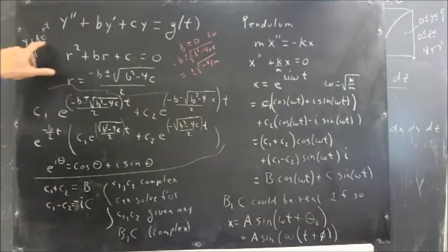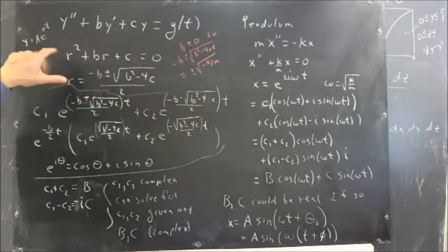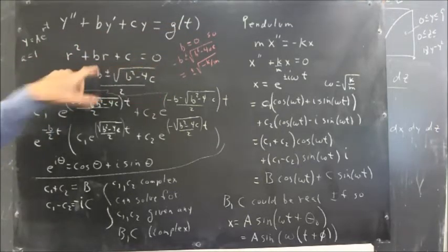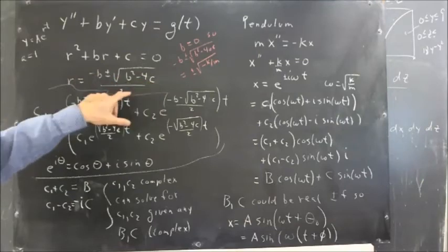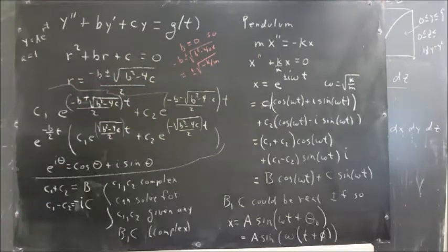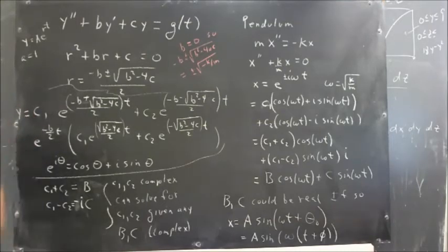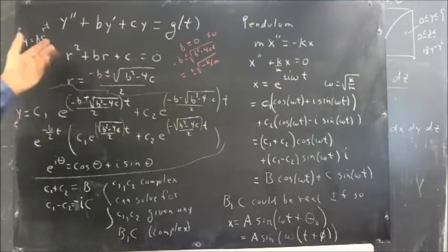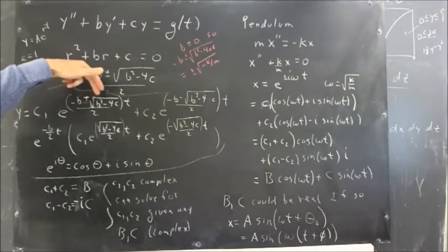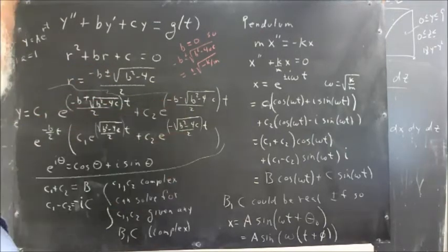So anyhow, using this substitution, we very easily convert the homogeneous equation into this algebraic equation with solutions. R equals negative b plus or minus the square root of b squared minus 4c over 2 by the quadratic formula, leading us to the solution, general solution. y equals c1, e to the negative b plus or minus the square root of b squared minus 4c over 2. We do the plus case here. We do the minus case here.